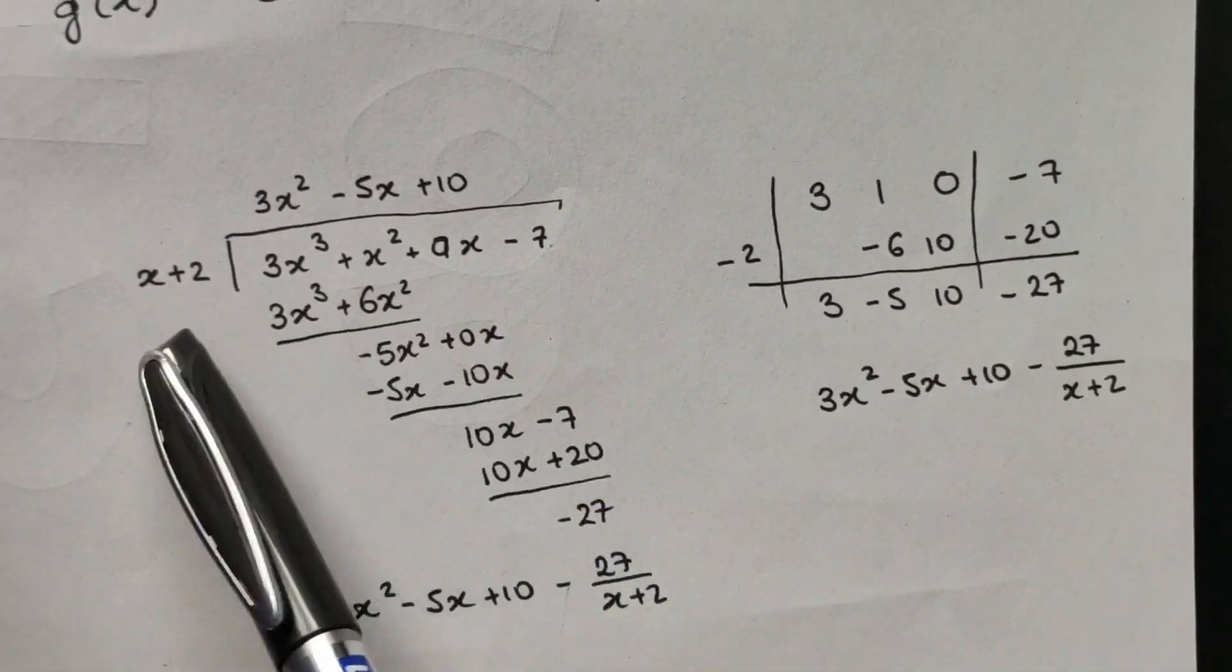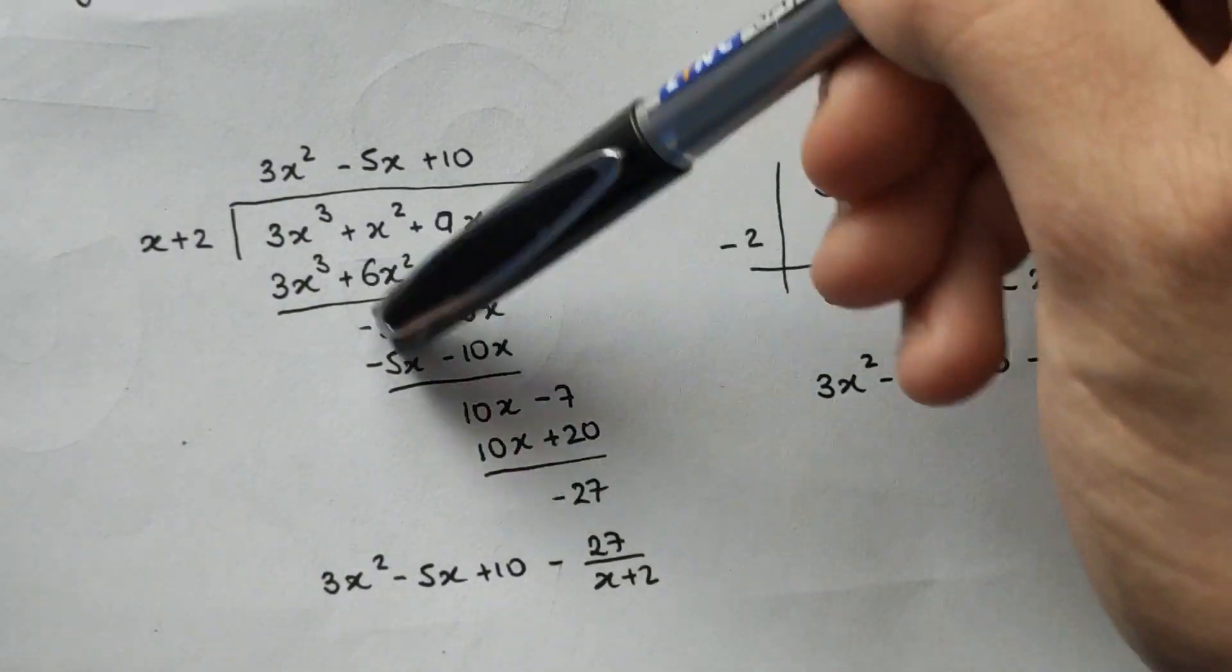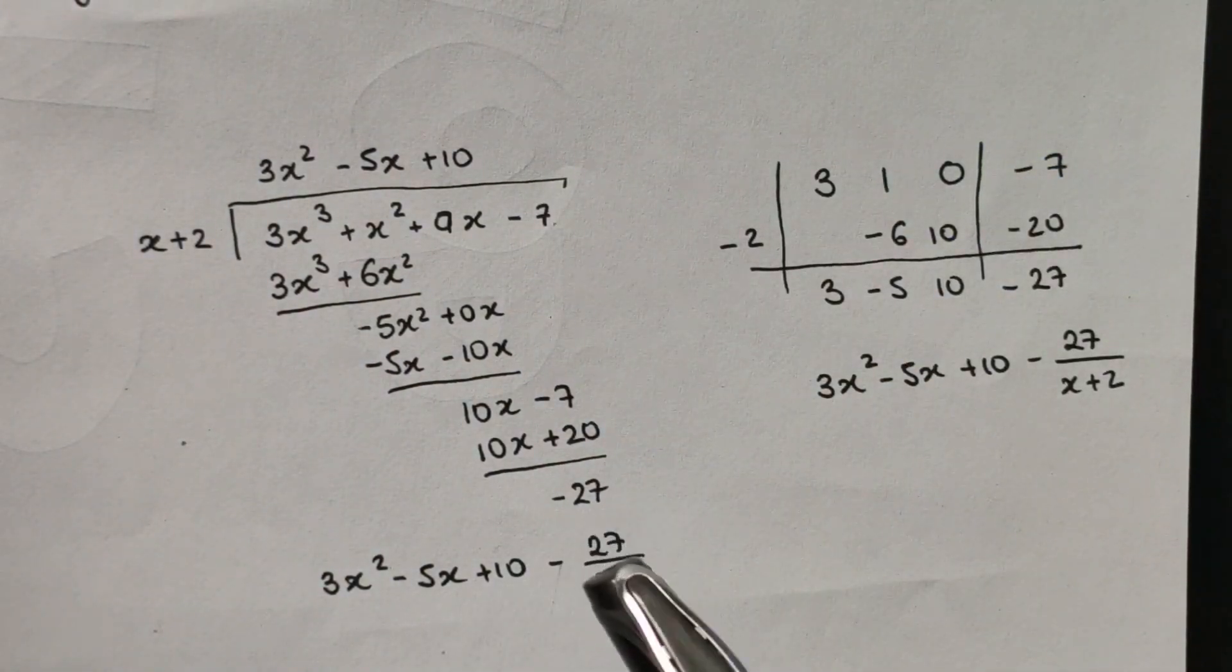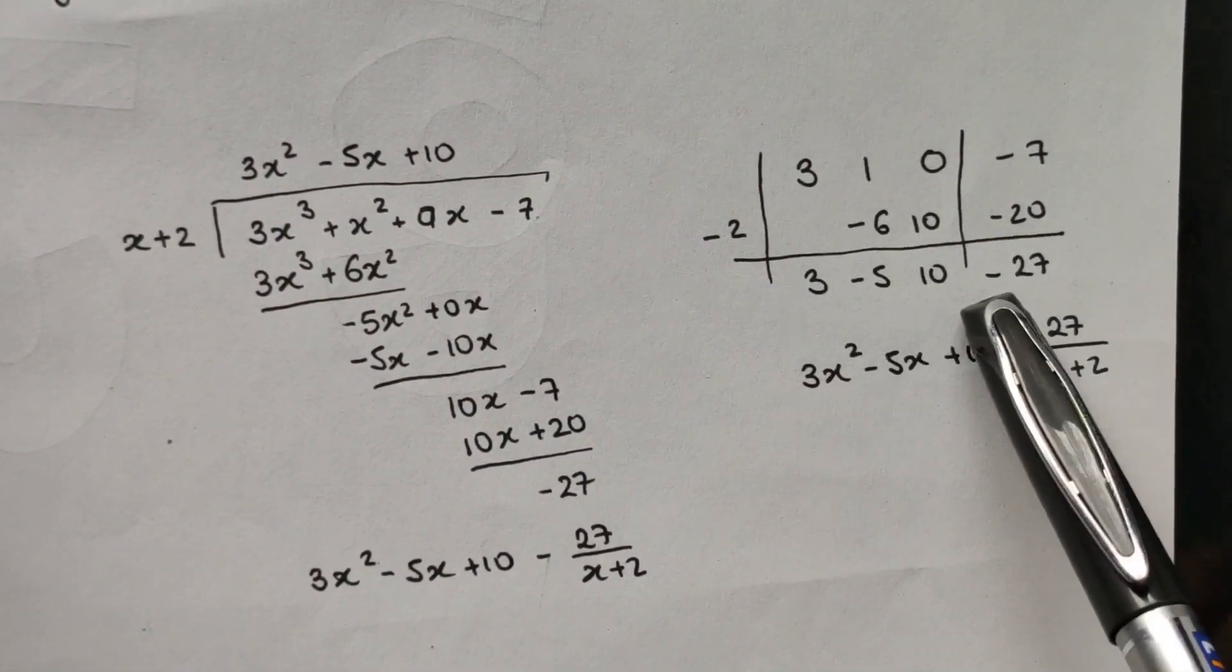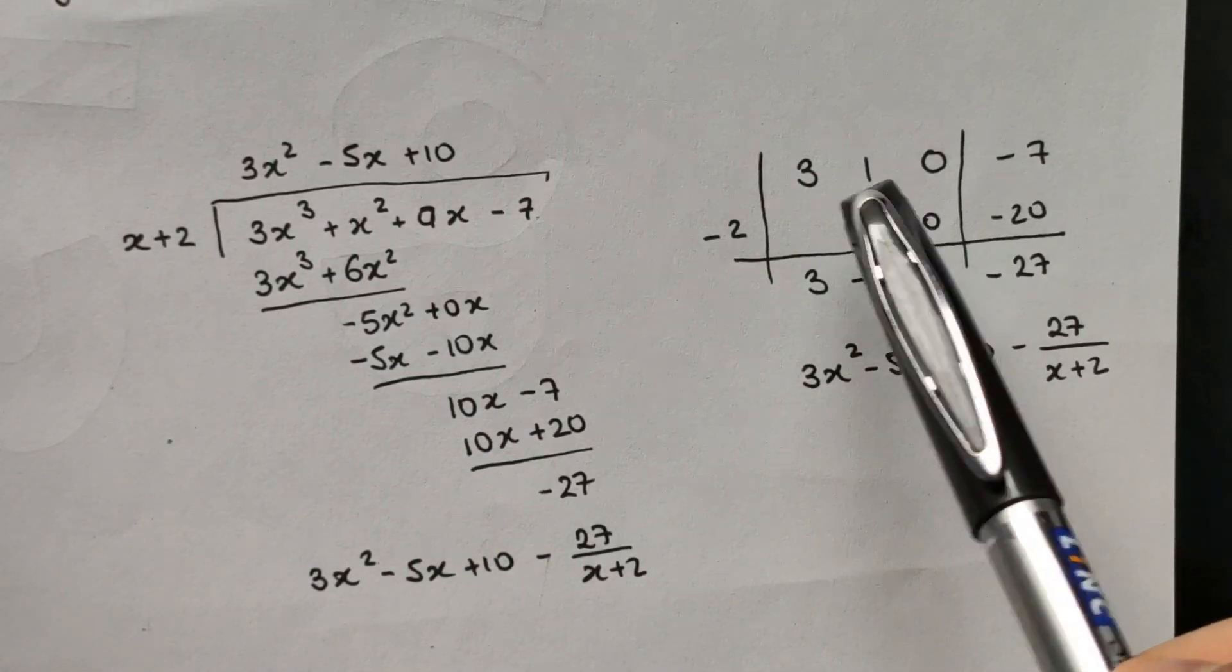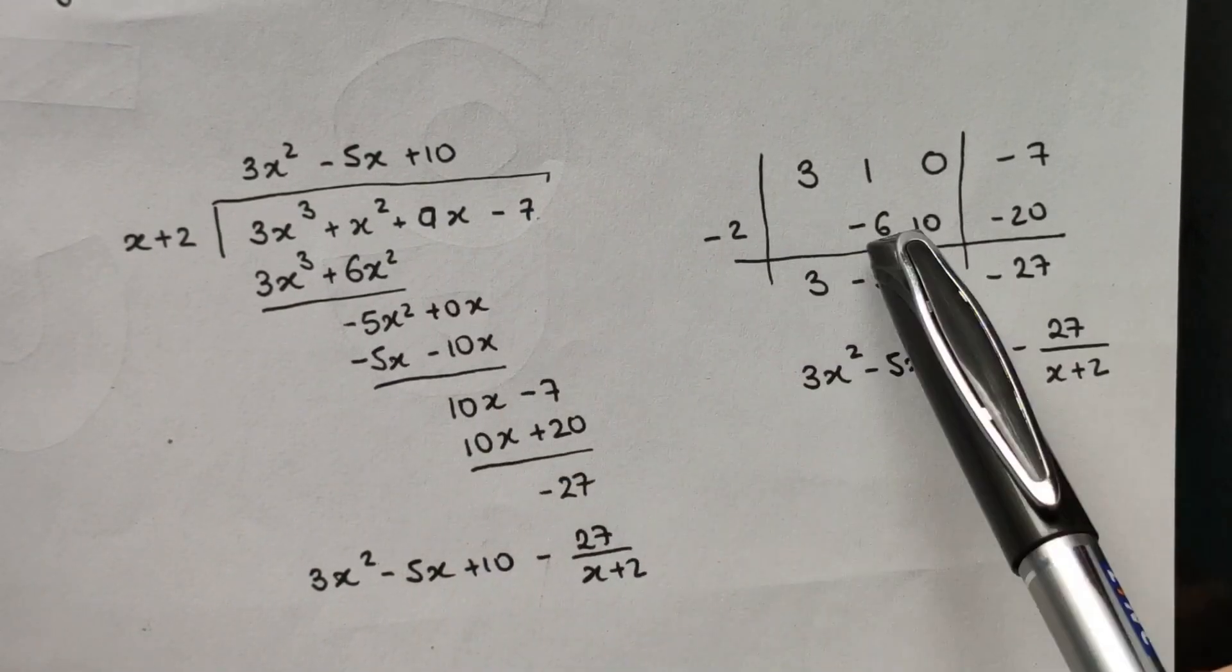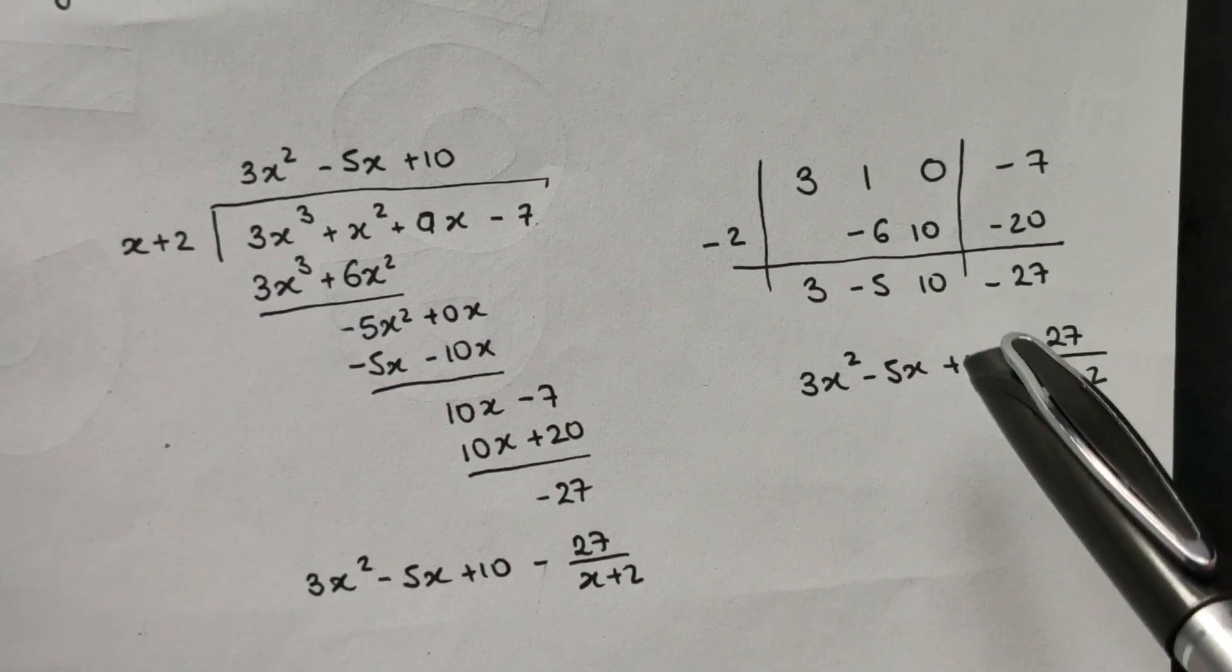And instead of keeping tabs on how many x's and things there are, you can just ignore them and use this method instead, where you don't have to faff about with all those things. Essentially, you have multiplied by minus 1, and instead of subtracting, you are indeed adding. And that's how the method works.